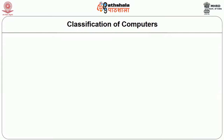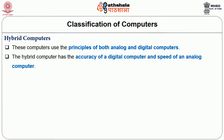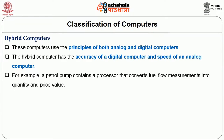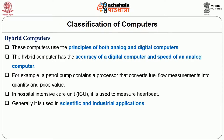Hybrid computers use the principles of both analog and digital computers. The hybrid computer has the accuracy of a digital computer and the speed of an analog computer. For example, a petrol pump contains a processor that converts fuel flow measurements into quantity and price values. In a hospital intensive care unit, it is used to measure heartbeat. Generally, it is used in scientific and industrial applications.